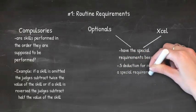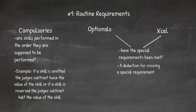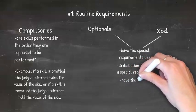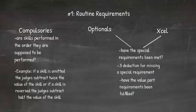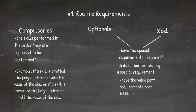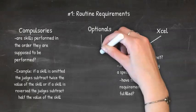In addition to special requirements, optional and Excel routines also have value part requirements. At each level there is a certain number of value parts that each gymnast is required to meet. If a gymnast is missing an A value part, a judge can take off a tenth; for a missing B value part, three tenths; and for a missing C value part, five tenths. Judges go back to their shorthand to confirm these requirements have been met.